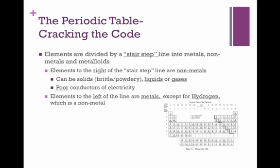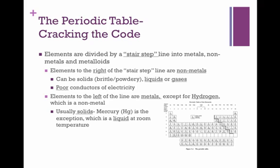Elements to the left of the line are metals, except for hydrogen of course, which is a non-metal. Usually metals are solids, except for mercury, which is number 80. It's the exception and it is a liquid at room temperature. But most metals have the qualities of being lustrous, which means shiny, and malleable, which means bendable. Metals are usually good conductors of electricity.